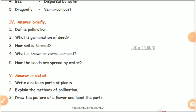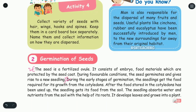What is germination of seed? Page number 89. The germination of seeds — a seed is a fertilized ovule. It consists of an embryo and food materials which are protected by the seed coat. During favorable conditions, the seed germinates and gives rise to a new seedling. Mark the first three lines.